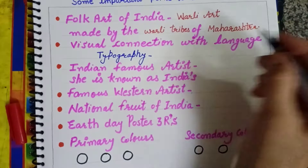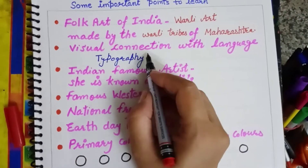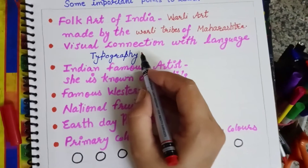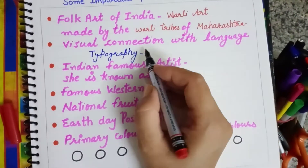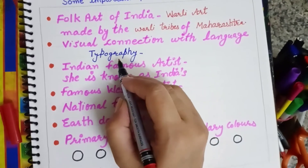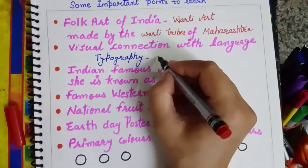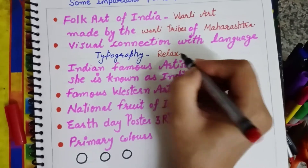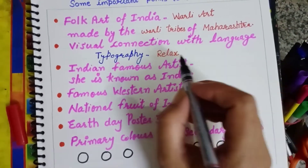You need to learn all the things slowly. Visual connection with language — when we see a language or word, we visualize it. What did we learn in typography? We learned how to be relaxed. What did we visualize? We learned how to create a book in crafts.